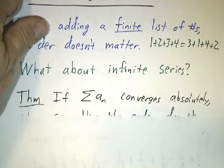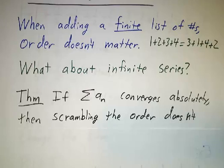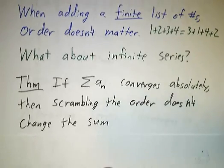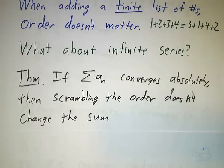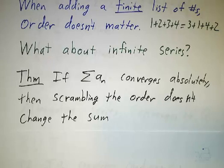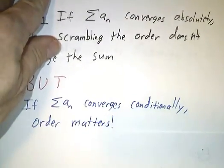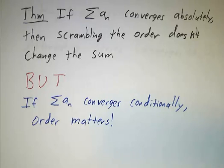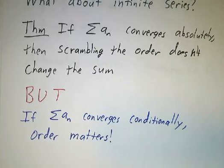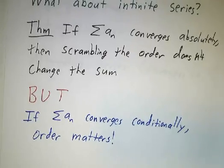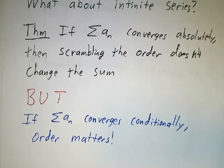If you have something that converges absolutely, then scrambling the order doesn't change the sum. The reason is that if it converges absolutely, there's only a finite amount of positive stuff and only a finite amount of negative stuff. Rearrange it however you like — you still get all of the positive stuff and all of the negative stuff, take the difference, and that's your answer. On the other hand, if you have something that converges conditionally, the order matters a lot. The rest of this video will work through a particular example of a conditionally convergent series where we change the order and get different answers.